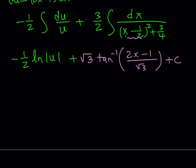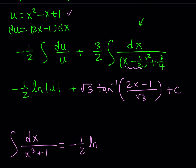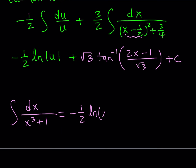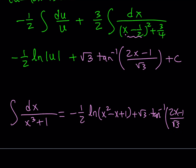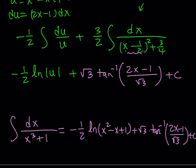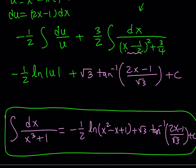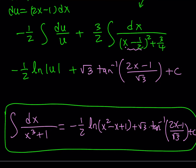So the integral of dx over x cubed plus 1 equals 1/3 times [ln of absolute value of x plus 1, minus 1/2 times ln of (x squared minus x plus 1) — no absolute value needed since it's always positive — plus square root of 3 times arctan of (2x minus 1) over root 3] plus C. That brings us to the end of this video. Thank you for watching, please comment, like, and subscribe.